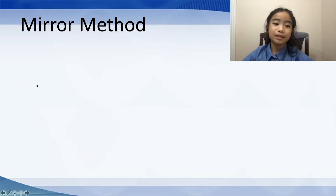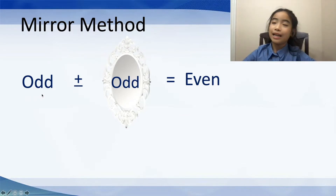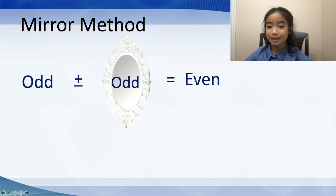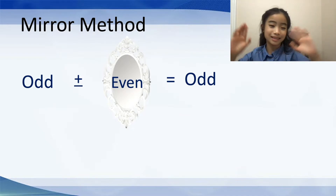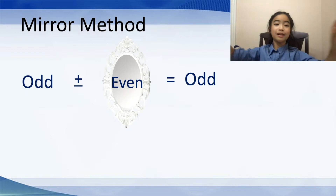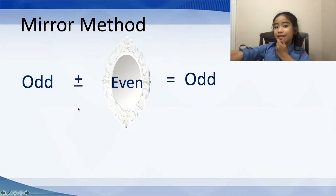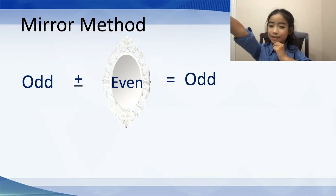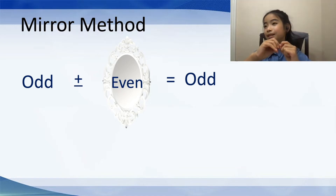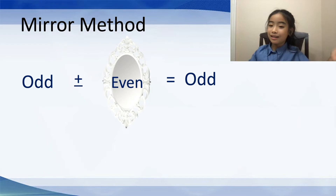The same goes with odd numbers. Imagine it like this: an odd number was looking at itself in the mirror and it saw an odd number inside the mirror — the result is even. Now, what if an odd number was looking at the mirror and it saw an even number inside the mirror? What would the result be? Well, it's odd. So basically, if a number sees itself in a mirror — same type — the result is even. If it sees a different one, then it's odd.